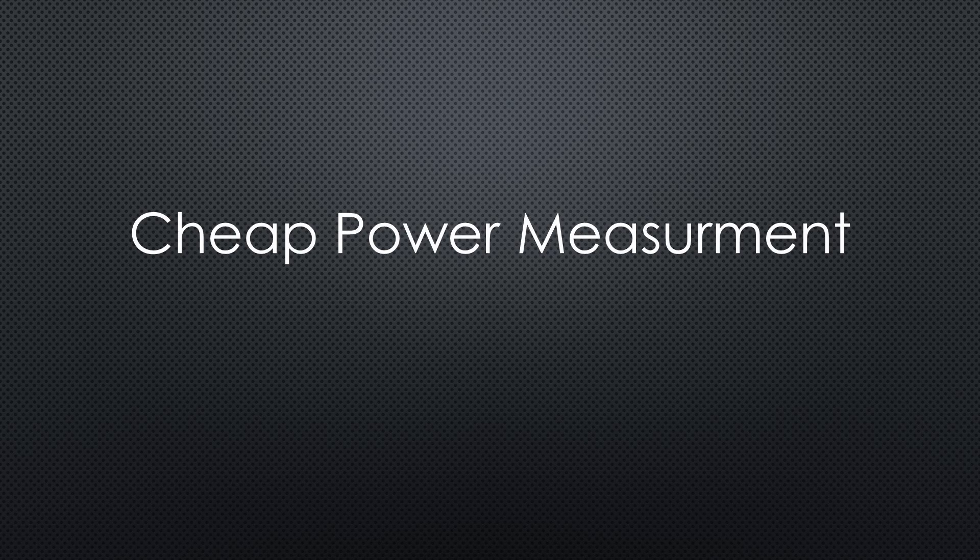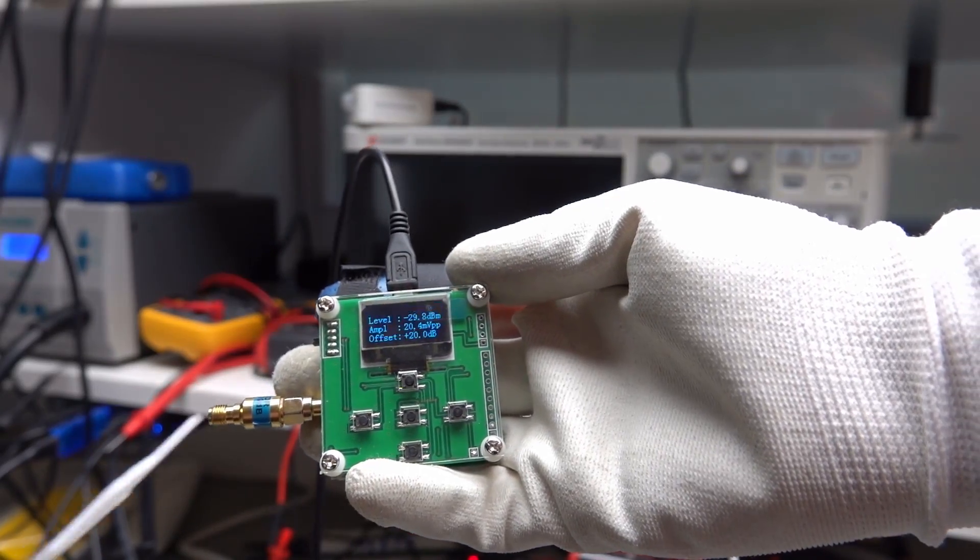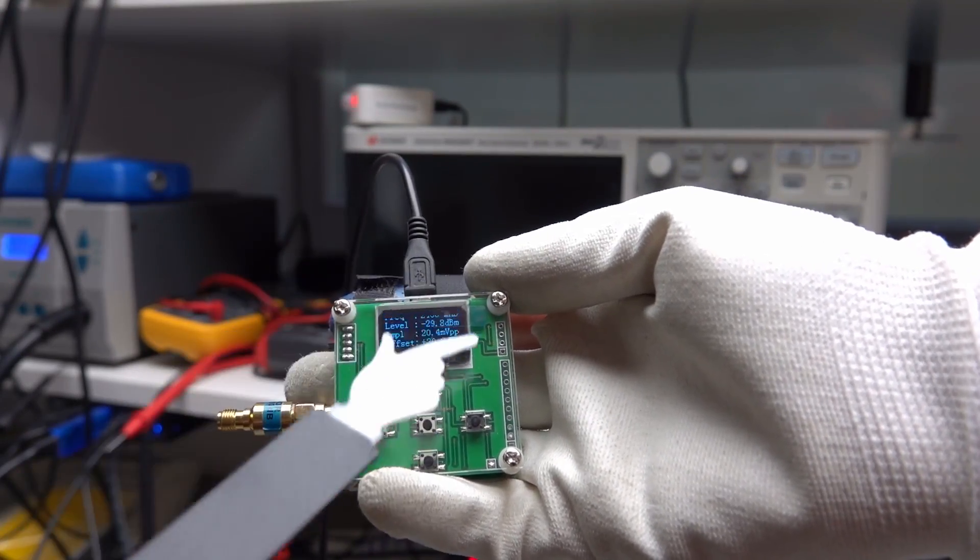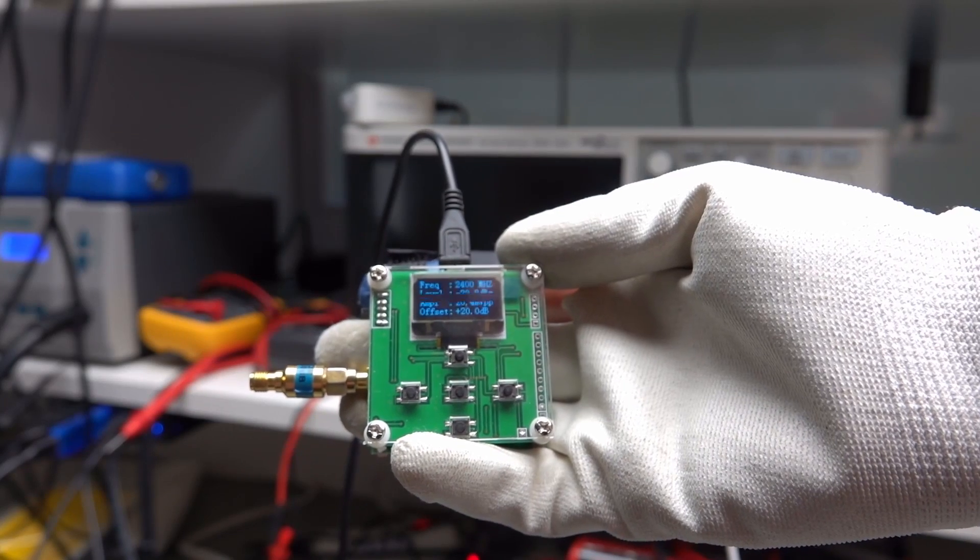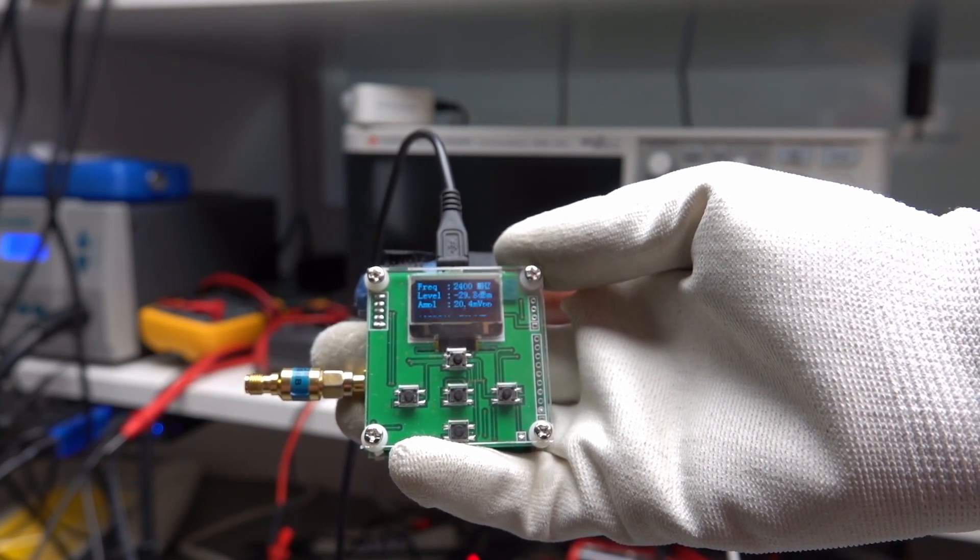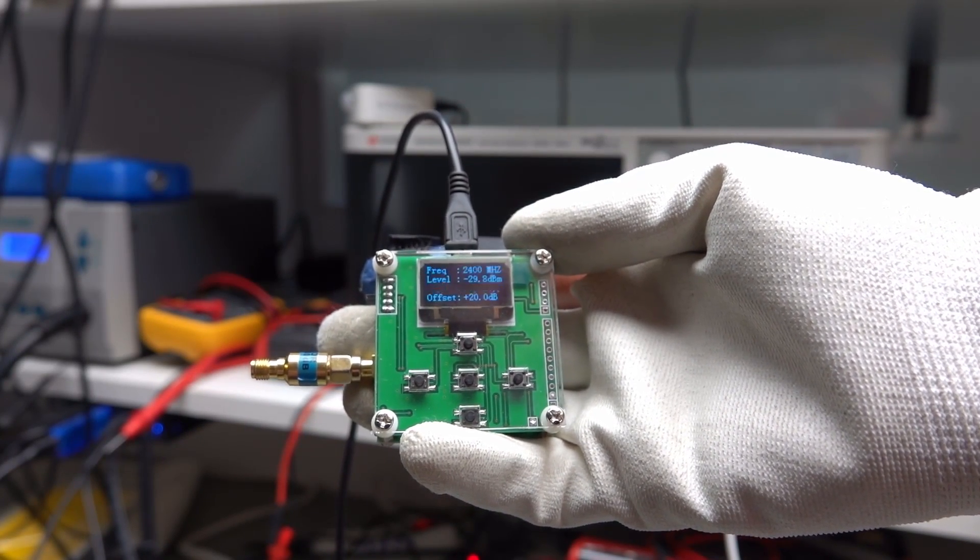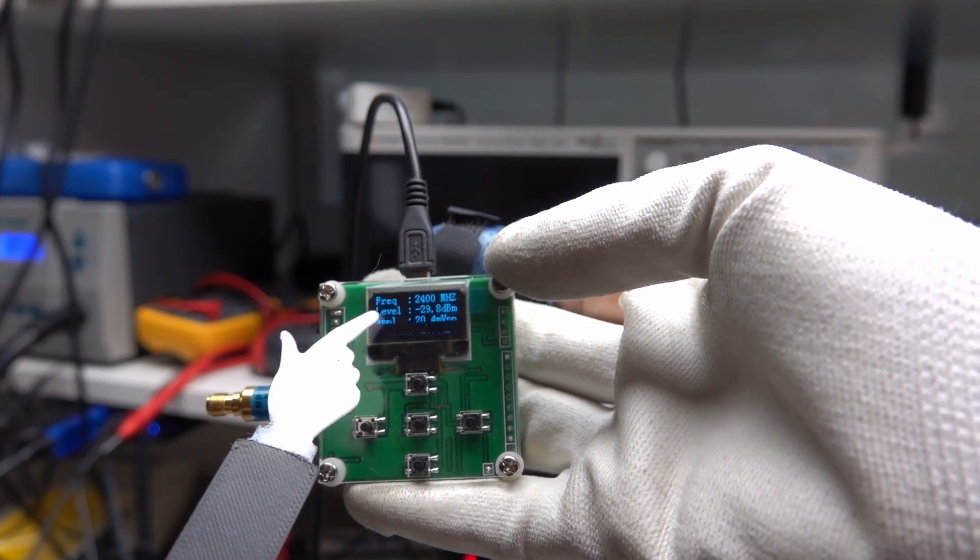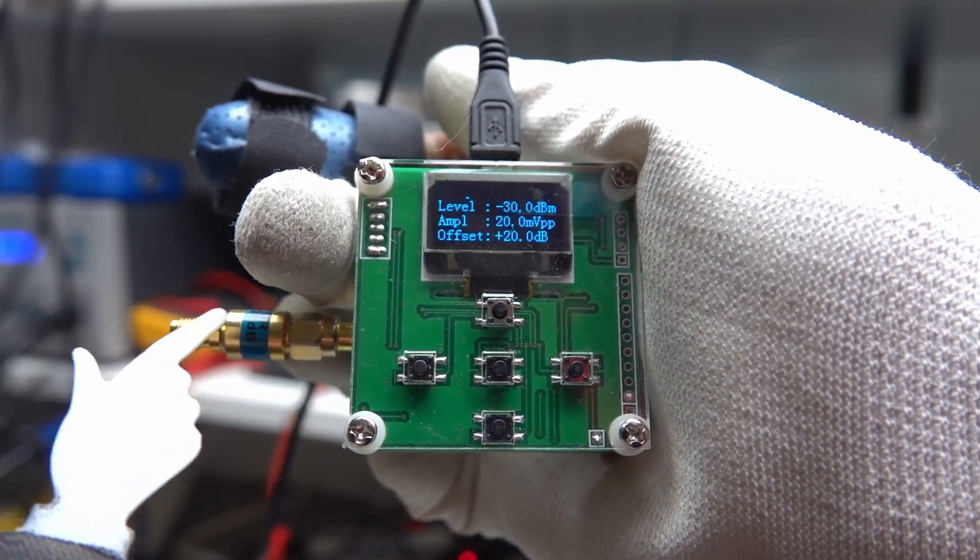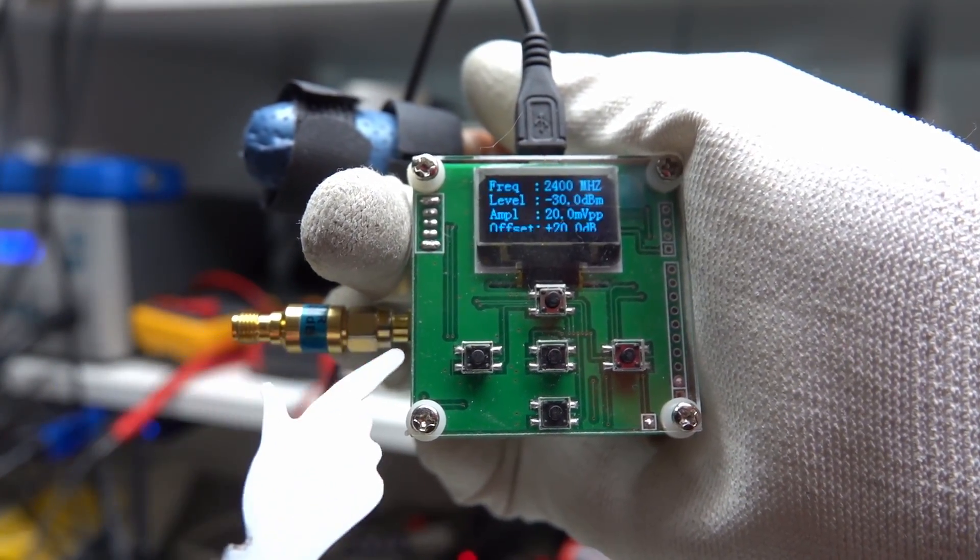Let's come back to my promise from the beginning of the video. I promised you a cheaper way to measure power. This is a power meter for around $30. Its range is from 1 MHz to 8 GHz. Incredible. But pay attention. It is only specified up to minus 5 dBm. And please adjust the frequency. Otherwise, your readings are not accurate.